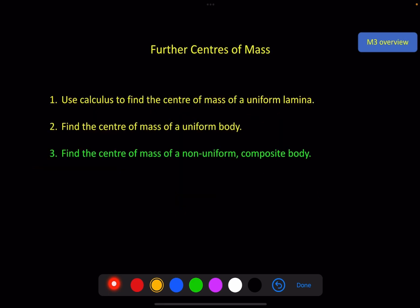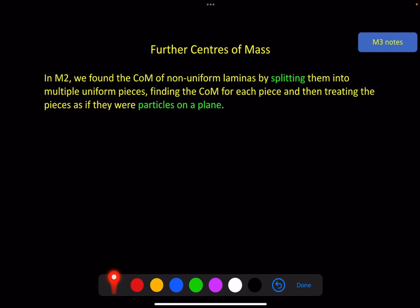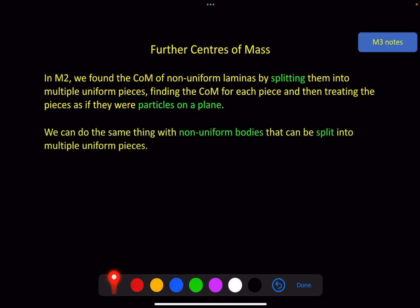In this final video of the chapter, we're going to find the centre of mass of a non-uniform composite body. In M2, we did something very similar — we found the centre of mass of non-uniform laminas by splitting them into multiple uniform pieces, finding the centre of mass for each individual piece using whatever methods we had, and then treating those pieces as if they were particles on a plane. We can do exactly the same thing with non-uniform bodies that can be split into multiple uniform pieces.